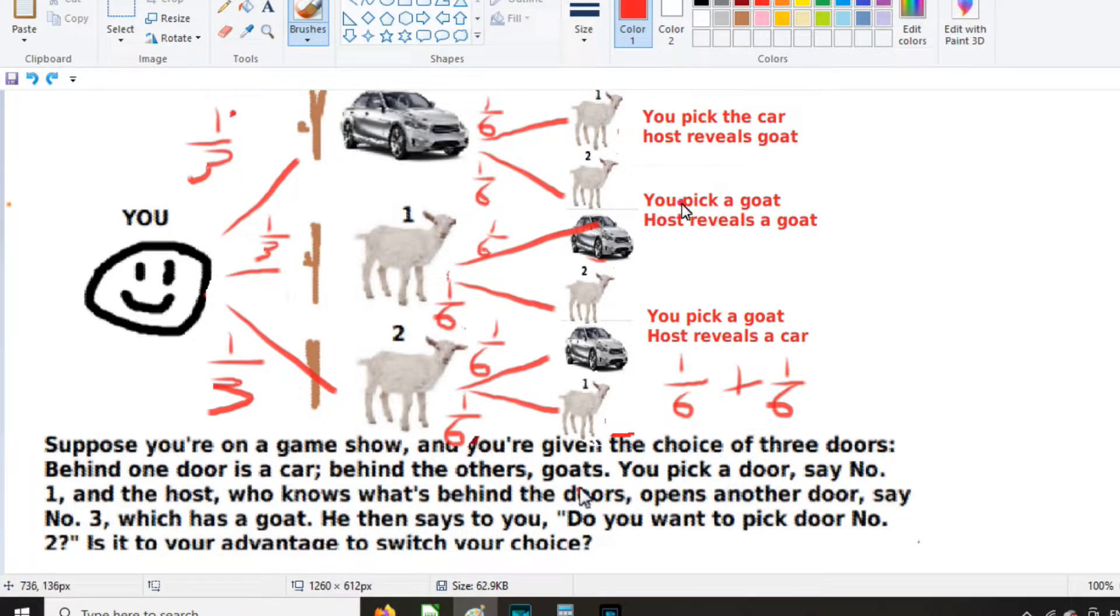So how many scenarios are there where you pick the car and the host reveals the goat? Well, you pick the car. So he could reveal goat one. That's one case. Or he could reveal goat two. That's two cases. So it's one-sixth plus one-sixth.